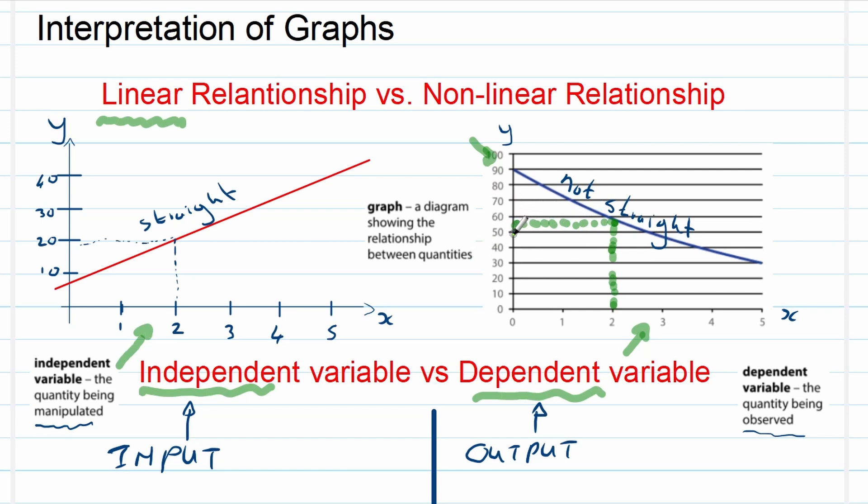So you understand: input is independent and that's normally the one on the x-axis. That's where you put it. Always put your independent variable on the x-axis. Your dependent variable you put on the y-axis, that means the vertical axis. Hopefully this is clear.